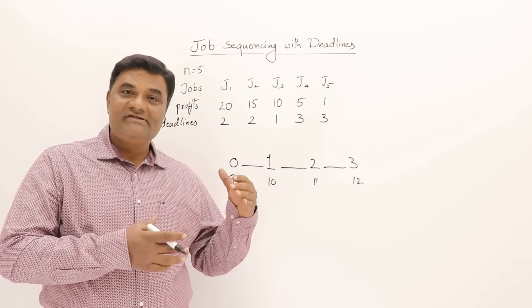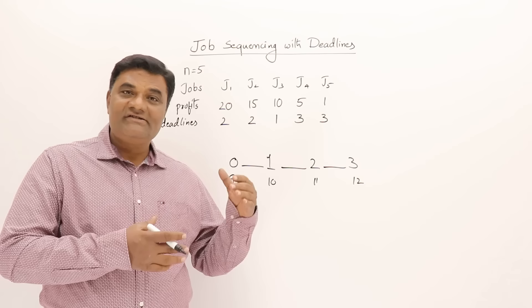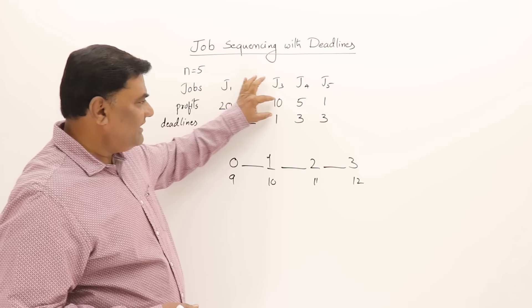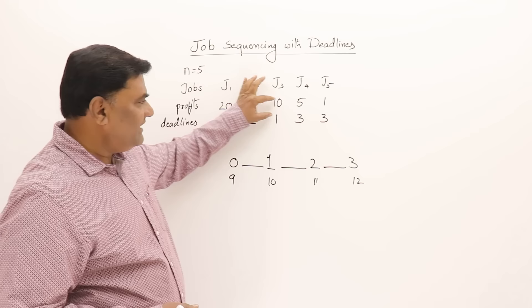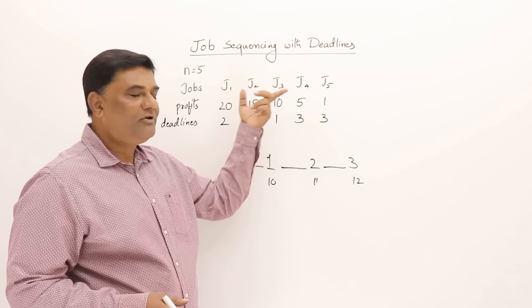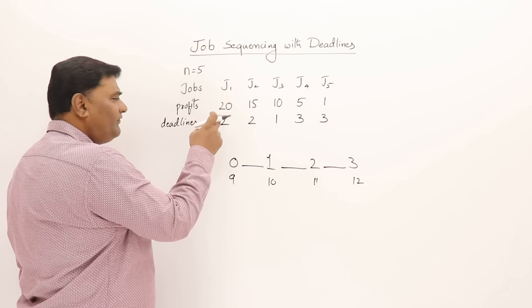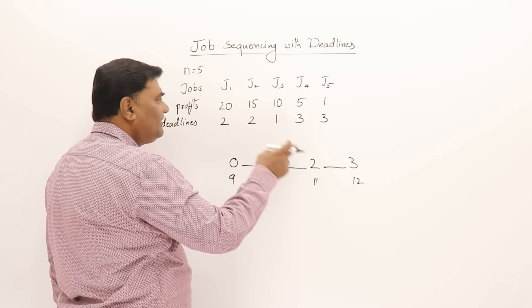Using the greedy method, we select jobs in the order of their maximum profit — highest profit first, then next highest, and so on. The jobs are already arranged in decreasing order of profit. The first job with the highest profit has deadline two, meaning it can be done by slot one to two. We select it for that slot.